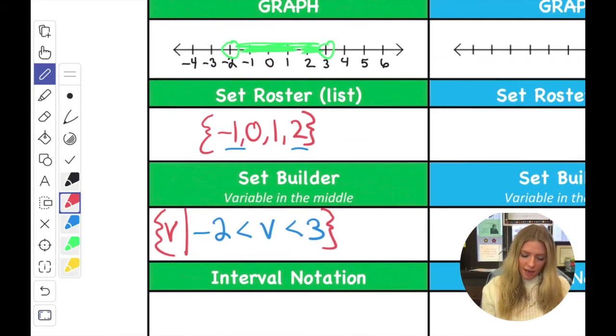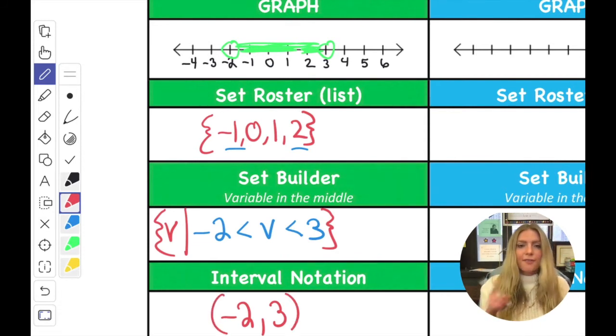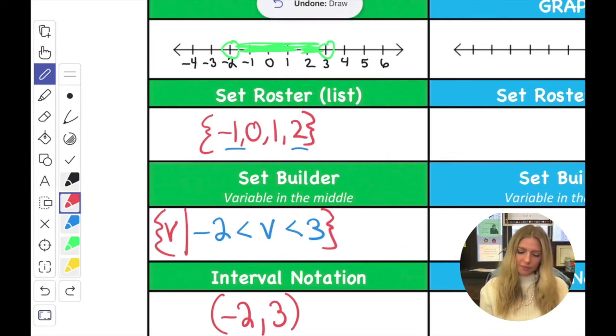All right, interval notation. Low number is on the left, high number on the right. And since neither one of them are included, they both get parentheses. If it were included, it would get a bracket, but neither one of these are, so that's that.